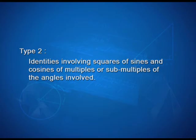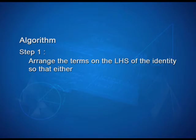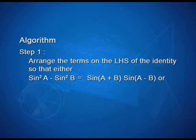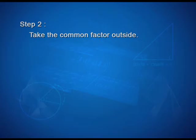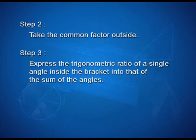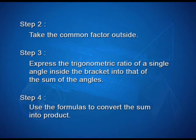Now let us take up Type 2 identities — identities involving squares of sines and cosines of multiples or sub-multiples of the angles. The algorithm: Step 1, arrange the LHS so that either sin²A minus sin²B equals sin(A+B) sin(A-B), or cos²A minus sin²B equals cos(A+B) cos(A-B) can be used. Step 2, take the common factor outside. Step 3, express the trigonometric ratios of the single angle inside the bracket in terms of the sum of angles. Step 4, use the formula to convert the sum into a product.